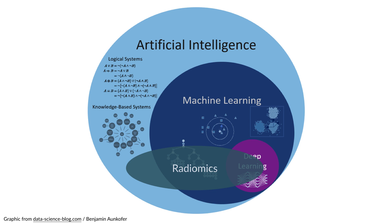Another term you may hear a lot is radiomics. All of the aforementioned systems can be used to analyze radiomics data. Radiomics data is basically taking the grayscale values of CT images and MR images and trying to detect patterns and statistical occurrences in these data that may tell you something about the presence or absence of disease or other pathology.